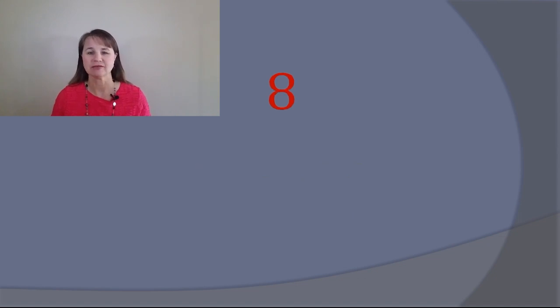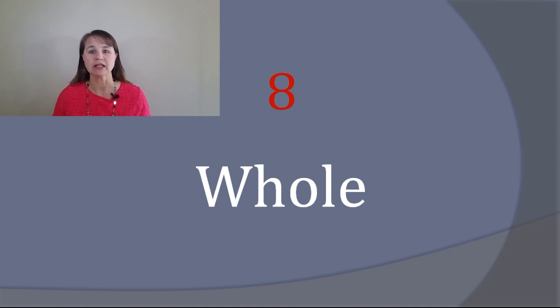Number 8. Hole. Hole has a silent W. This word is pronounced exactly the same as hole, spelled H-O-L-E. In addition, there is one other tricky part, the pronunciation of the L.